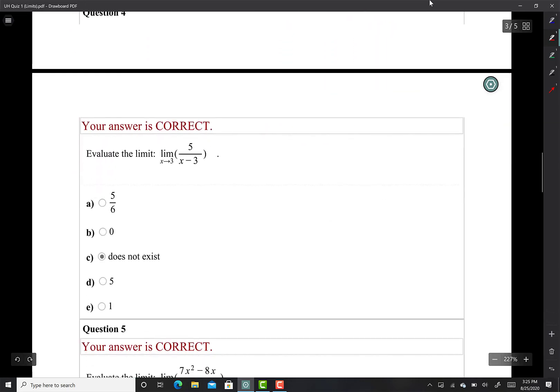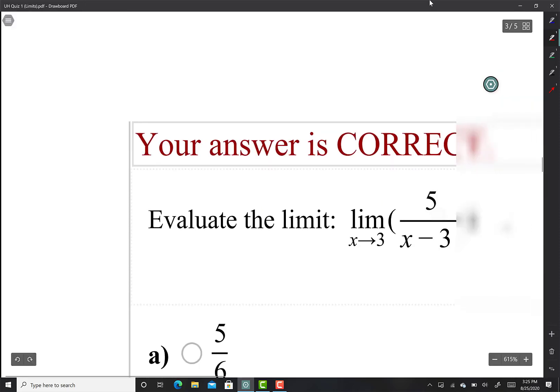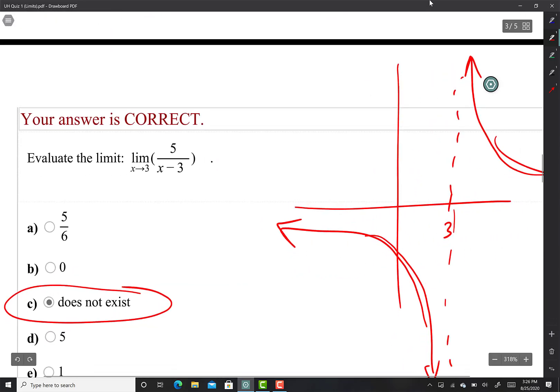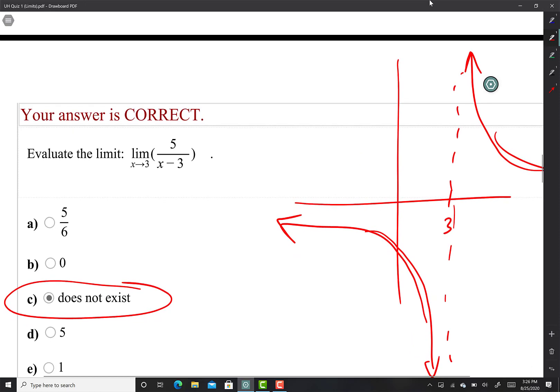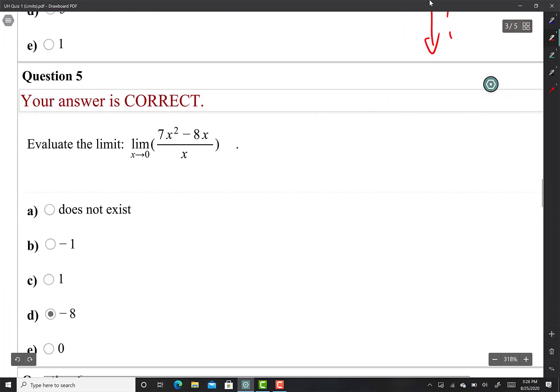Limit as x approaches 3 does not exist. Why? Because if I approach 3 from the right hand side, here's the vertical asymptote, it is positive infinity. If I approach 3 from the left hand side it is negative infinity. If it would have had a minus sign there it would have been negative infinity. With a plus sign it would have been positive infinity. Infinity is just a behavior, so does not exist.